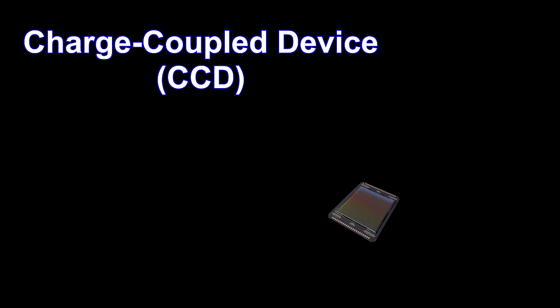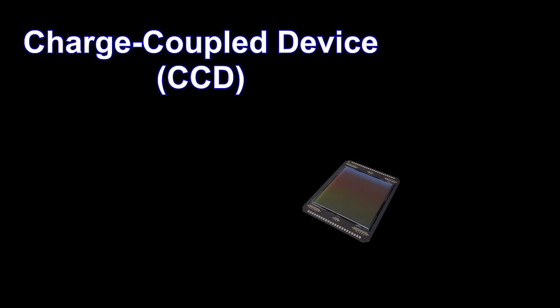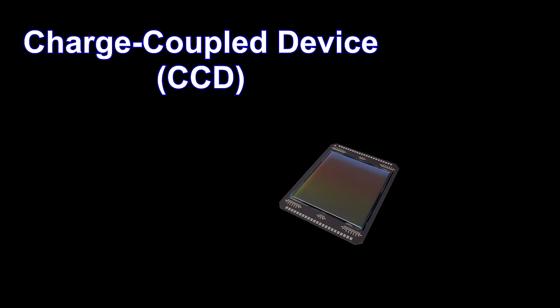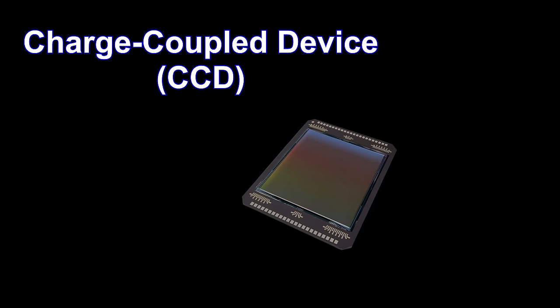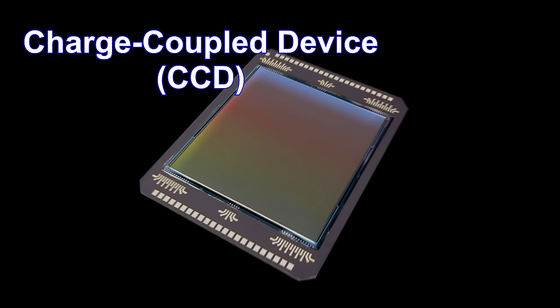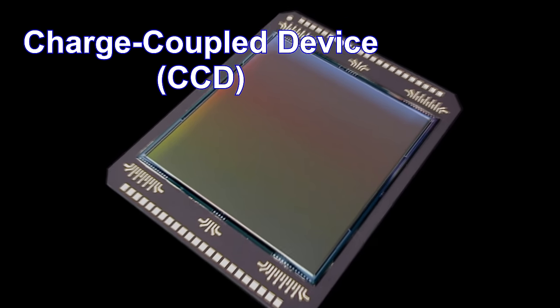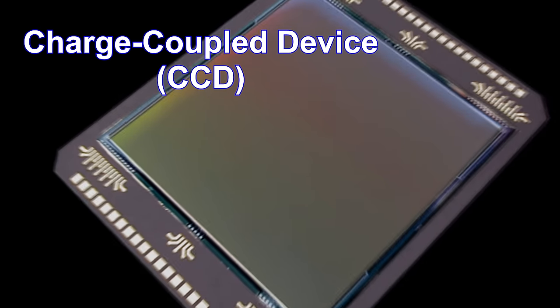Of course, today's telescopes no longer use photographic plates. Instead, a charge-coupled device, or CCD for short, is used. These enable direct connections between an object's incoming photons and its image on a computer.